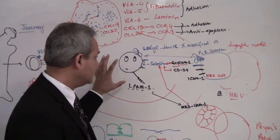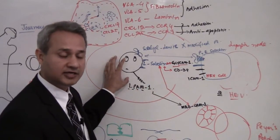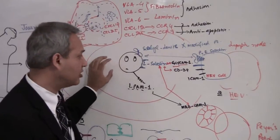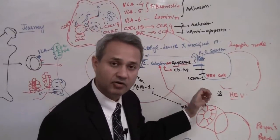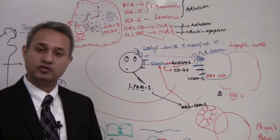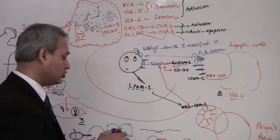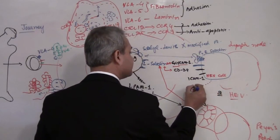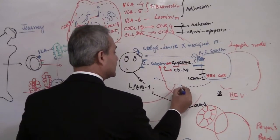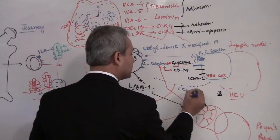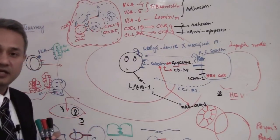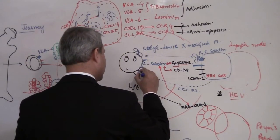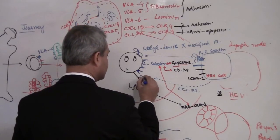This T cell is not going to stick anywhere else as it circulates throughout the body, because the ligands it connects to are only present in lymph nodes or Peyer's patches. There is one more thing: the high endothelial venular cell secretes CCL21, which is a chemokine.